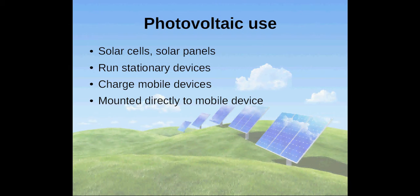Solar cells or solar panels can be used to convert solar energy into electricity. The produced electricity can be used like any other form of electricity, for example, to run stationary devices like TVs or washing machines, or to charge mobile devices like mobile phones or cars.